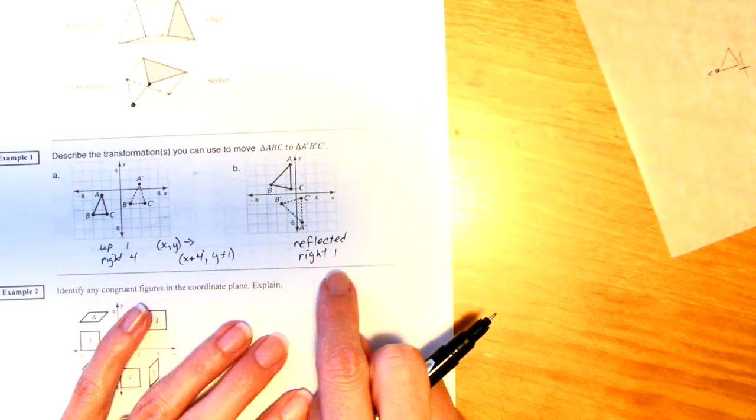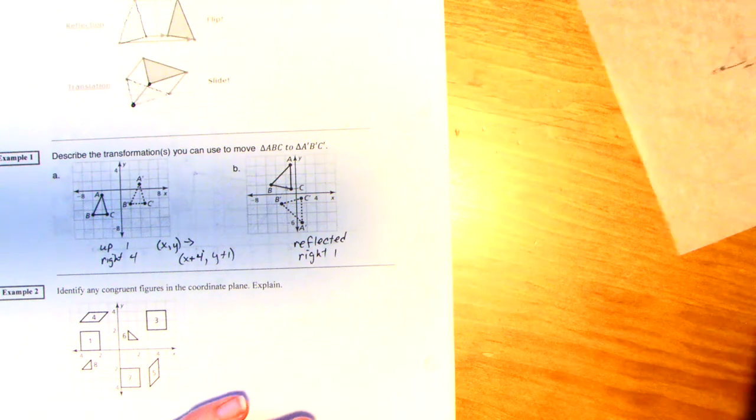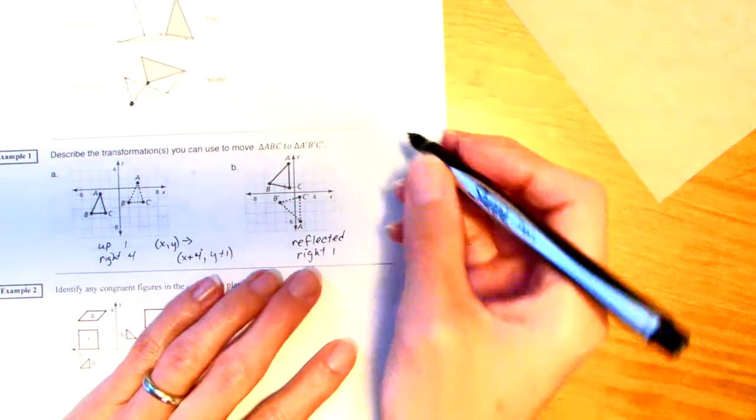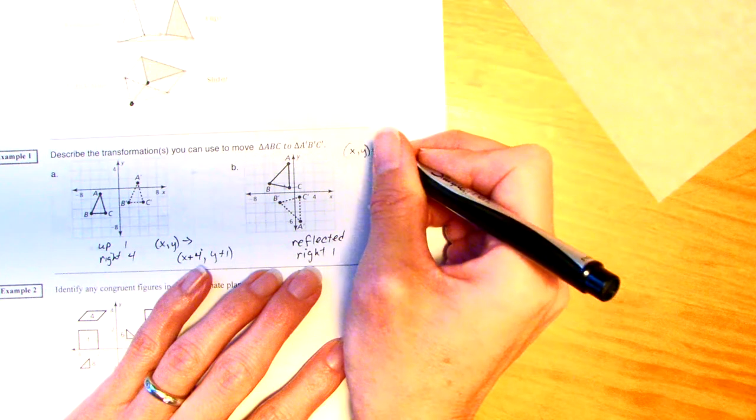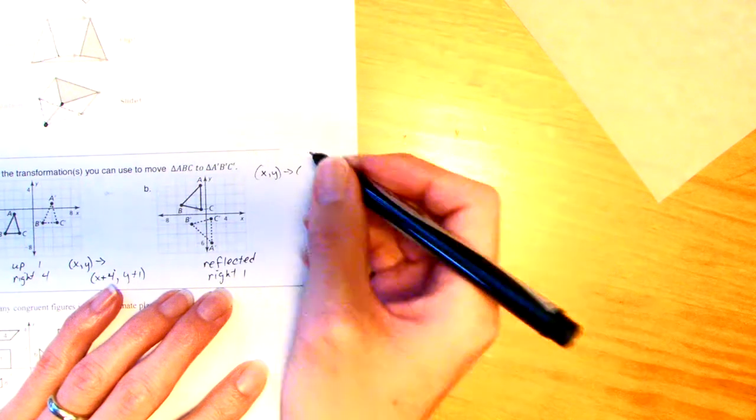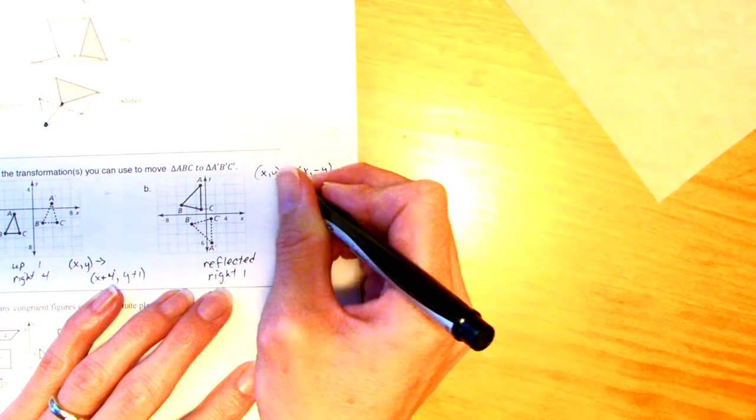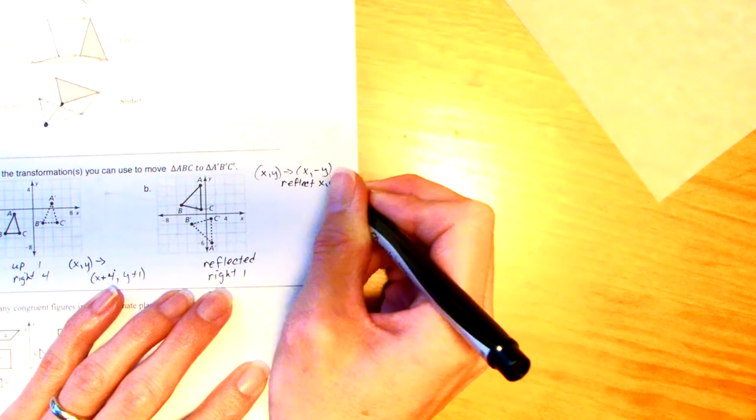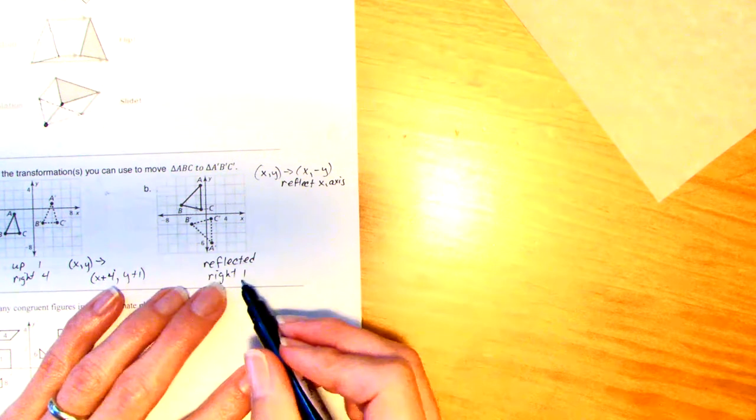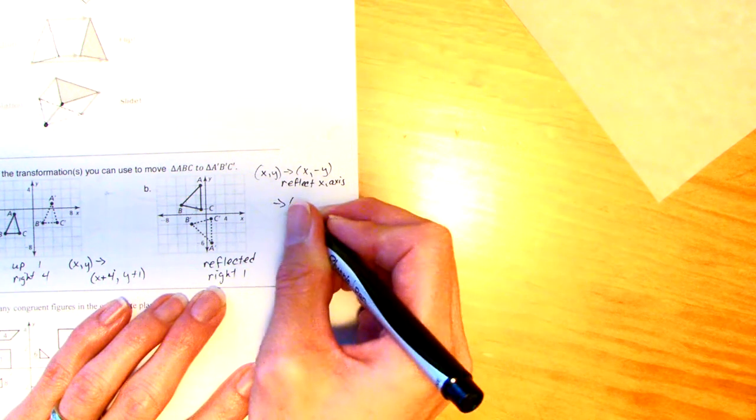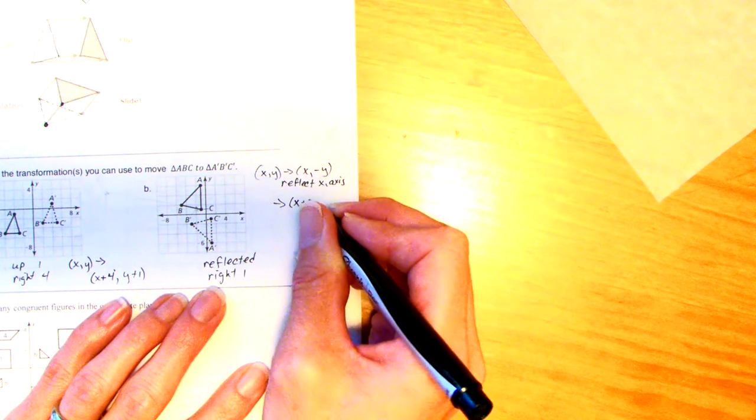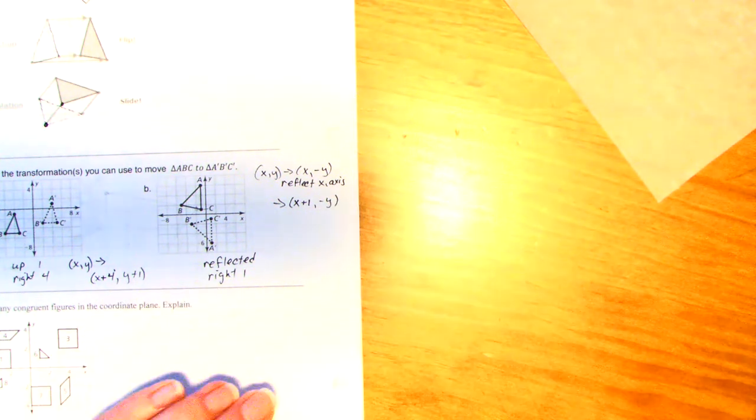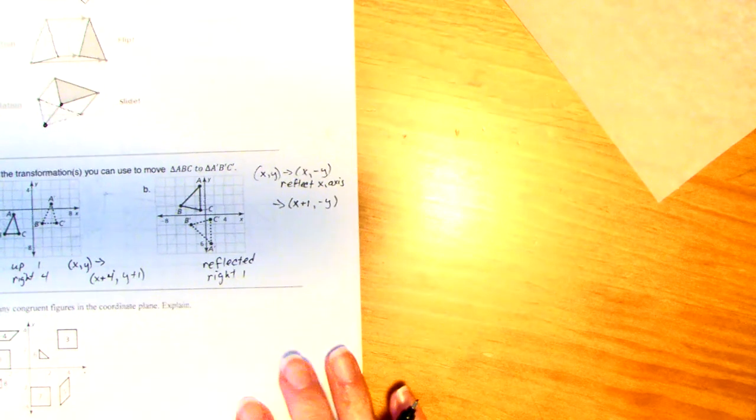This could be a really big challenge problem. What would that rule be? If you think about it, you could go back to the rules when we reflected over the X axis. The Y value changed sign. Remember that? XY went to X negative Y. This is a reflection over the X axis. But then we're going to go to the right one. So, that means it's going to be X plus 1, and then we have the negative Y. You can always check to see if that works, but pretty cool, huh?